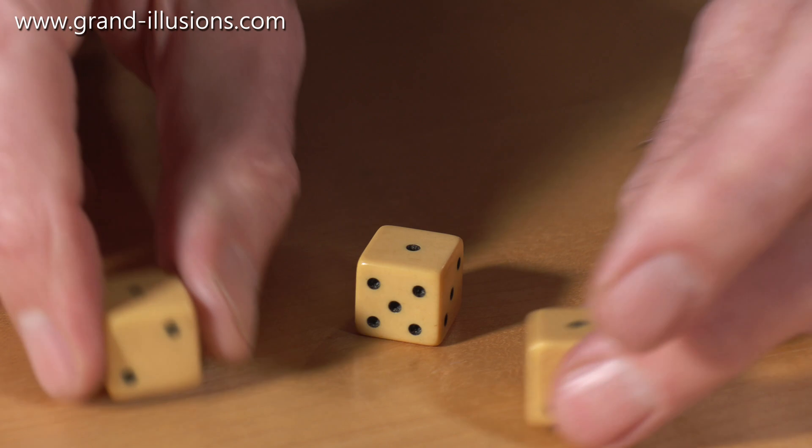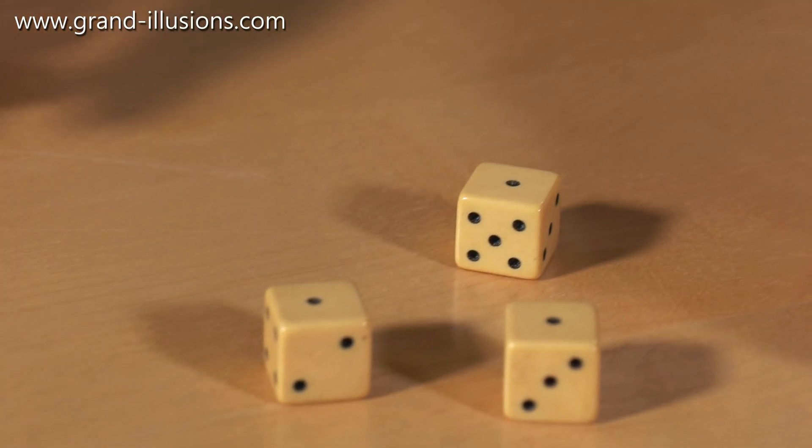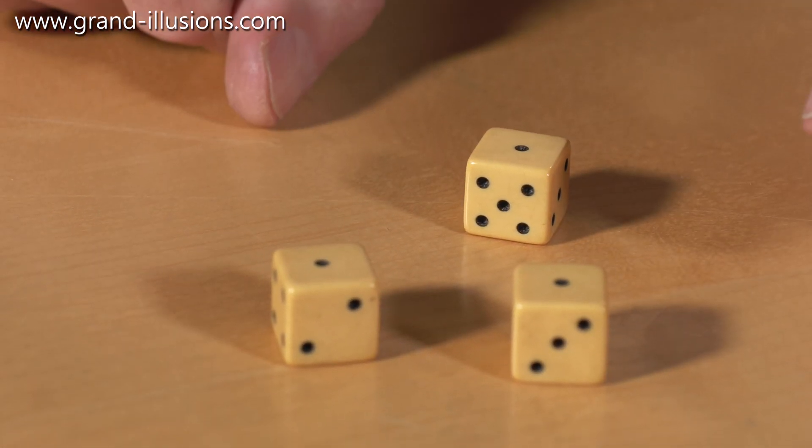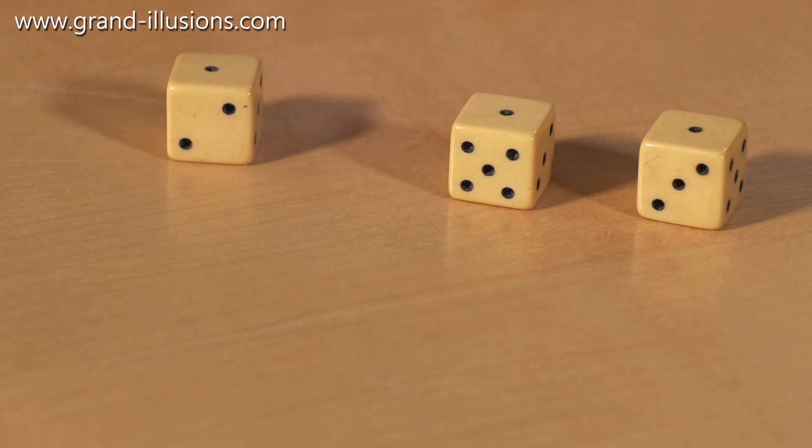So I thought that any dice would have to be completely symmetrical, provided they've got the opposite sides adding up to seven, but it turns out it's not the case.